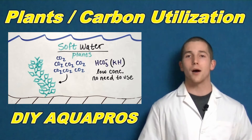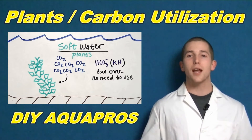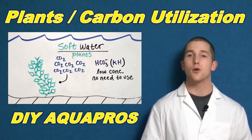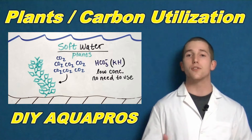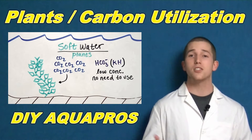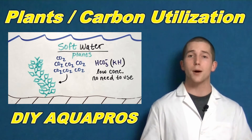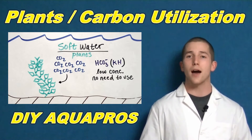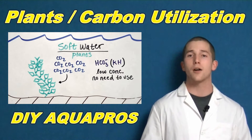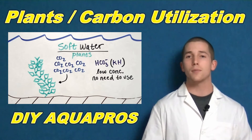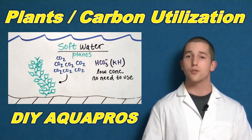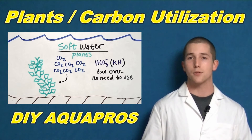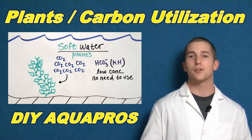Hey everybody, Mike here from DIY Aquapros. Today we're going to be talking about aquarium plants and their ability to use different forms of carbon, specifically CO2 and bicarbonate. We're going to highlight how the natural environment in which they evolved may have prompted them to be more versatile as far as carbon uptake goes. Let's start our discussion.